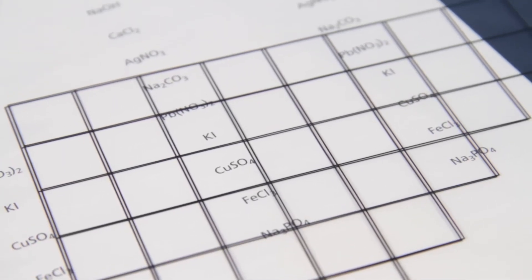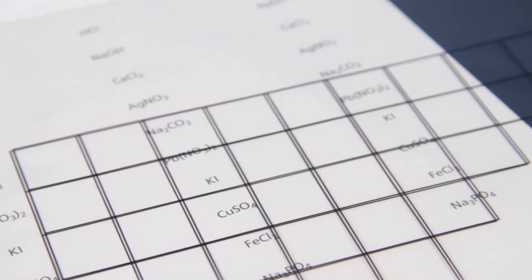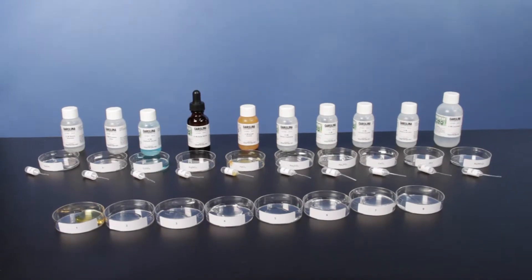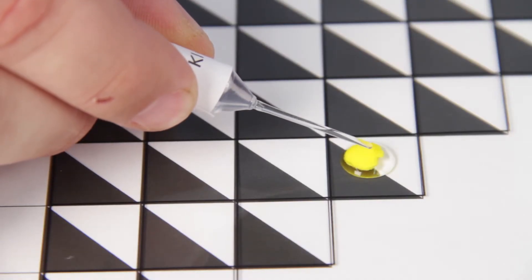Carolina Chem Kits reduce teacher prep time with detailed setup instructions and ready-to-use chemicals. Cleanup and disposal hassles are also reduced with small volumes and green chemicals whenever possible.